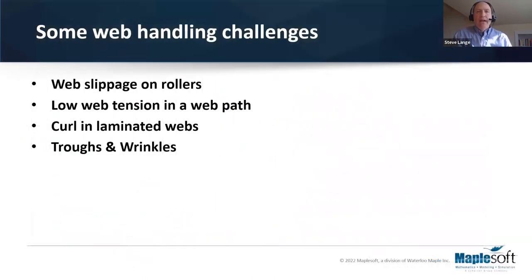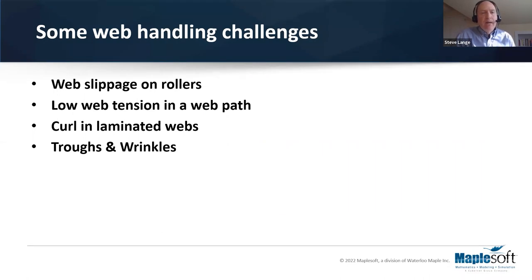So that was a quick introduction to the MapleSim library. Now we'll talk about cases covering traction or web slippage on rollers, cases where you might get low tension in a web path, an example of curl in laminated webs, and finally, what we mean by troughs and wrinkles in webs, since that's a very common issue for web handling.